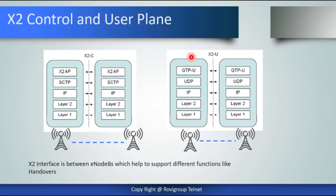X2 control and user plane: we have two diagrams — X2C for the X2 control plane and X2U for the X2 user plane. The X2 interface supports data forwarding and intra-LTE handover. User plane data is carried on the X2 interface when the data forwarding at intra-LTE handover feature is used. This packet forwarding drastically reduces the risk of TCP fallback into slow start due to handover, as no packets are lost, meaning user throughput won't be reduced during intra-LTE handover.